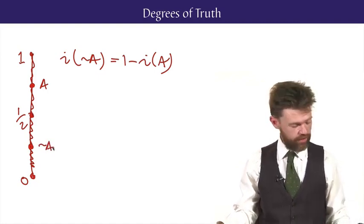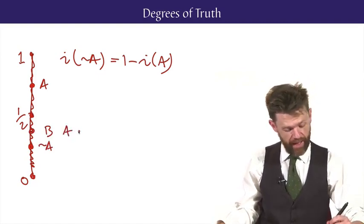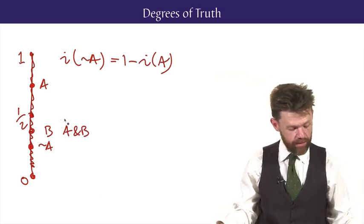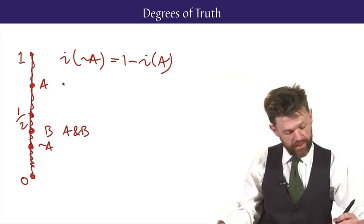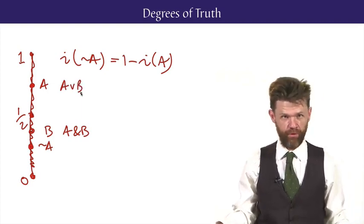For conjunction, if I had B somewhere along this set of degrees, then the conjunction A and B should take the minimum of the two values of A and B, whereas the disjunction A or B should take the maximum of the two values.